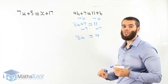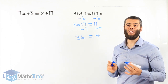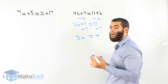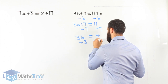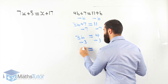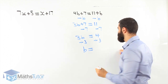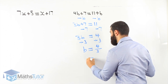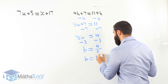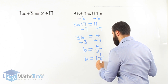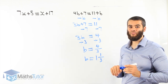Now we have a one-step equation: 3b equals 4. We know 3b is 3 times b, and the opposite of times is divide. So we divide by 3 on both sides. 3 divided by 3 is gone — it's 1b. 4 over 3 is 1 and 1 third. That's our answer.